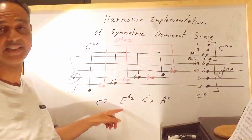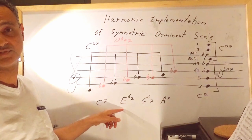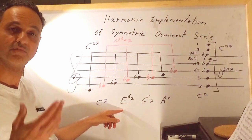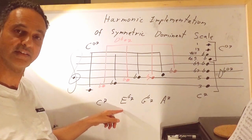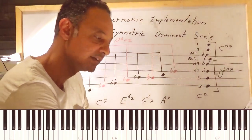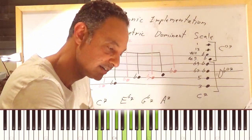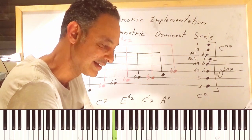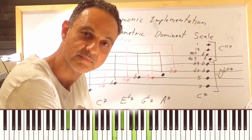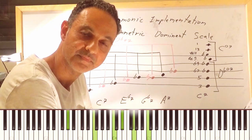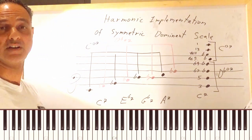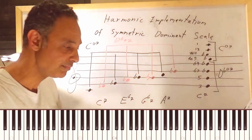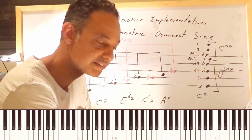The E flat seven chord is the five of A flat, so it wants to resolve to A flat. I can also resolve it to A flat minor.